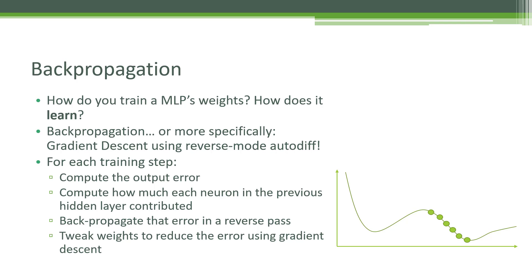So how do you train a multi-layer perceptron? It's using a technique called backpropagation. It's not that complicated really at a conceptual level. All we're doing is gradient descent, like we talked about before, using that mathematical trick of reverse mode autodiff to make it happen efficiently.